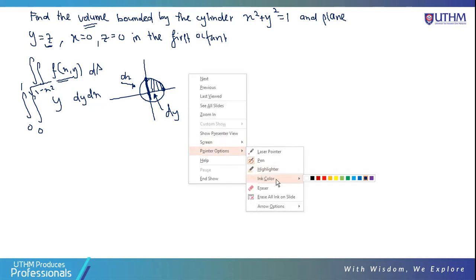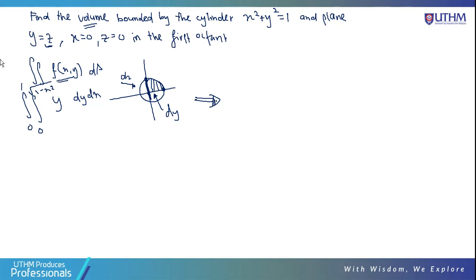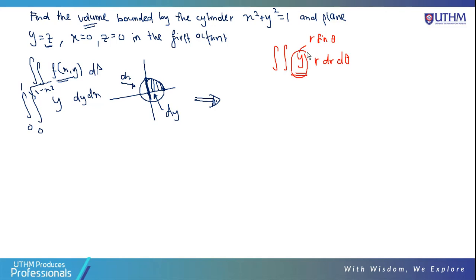Converting to polar: F(x,y) = y becomes R sinθ, and dA becomes R dR dθ. So the integral becomes ∫∫ R sinθ · R dR dθ, which simplifies to ∫∫ R² sinθ dR dθ. No more x or y — everything is in terms of R and θ.